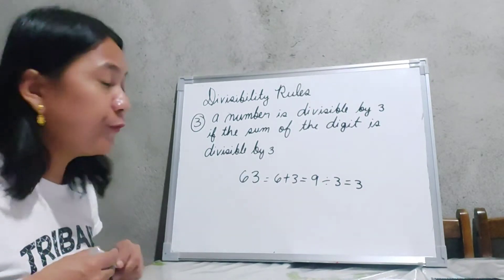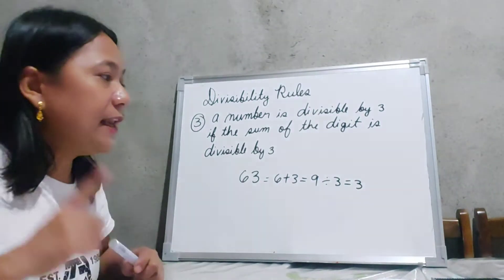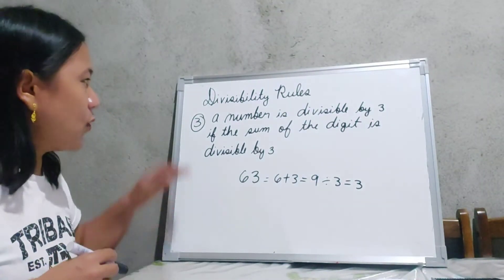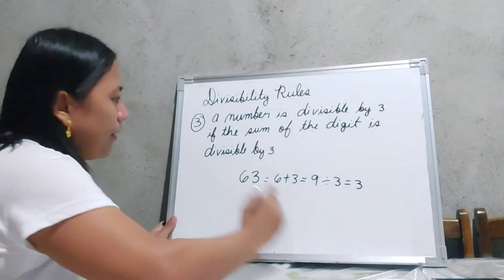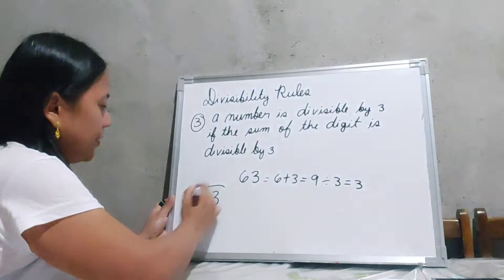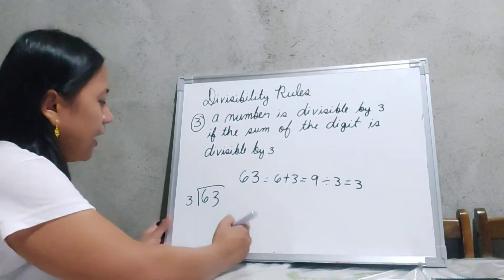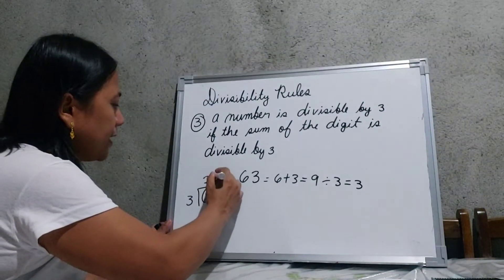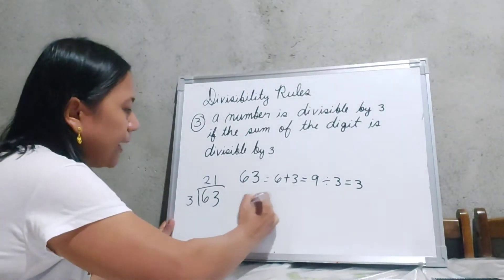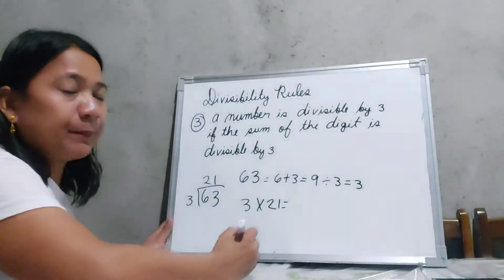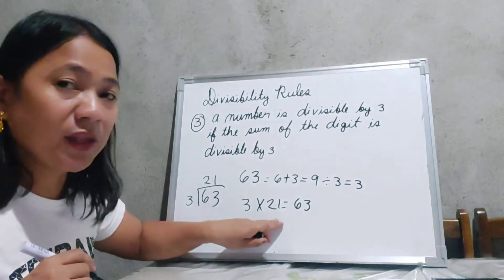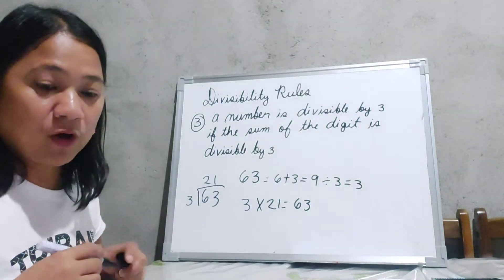Since we already proved that 63 is divisible by 3, let us find out what the factors of 63 are. We divide 63 by 3 and the quotient we get is 21. So 3 and 21, when we multiply them, will give us the product 63. Therefore, 3 and 21 are the factors of 63.